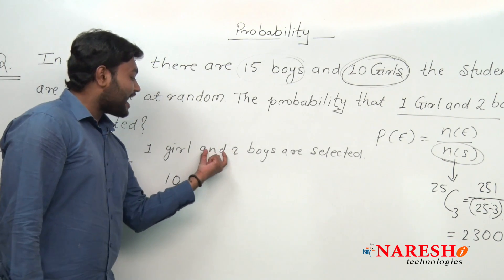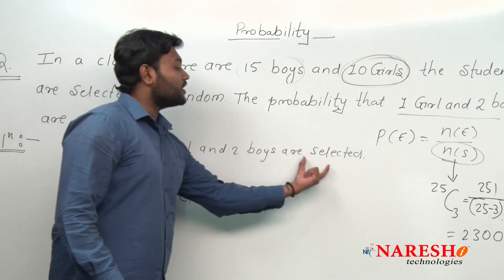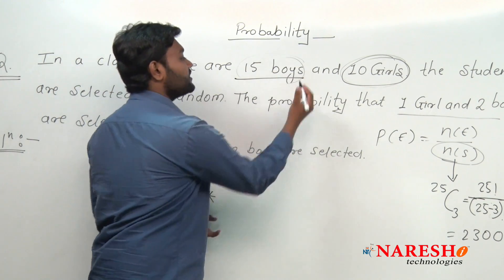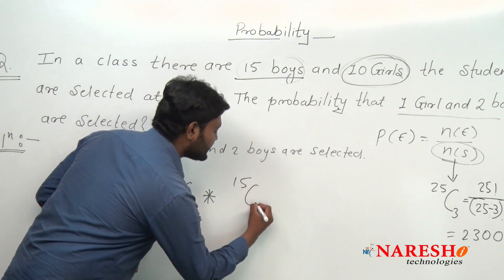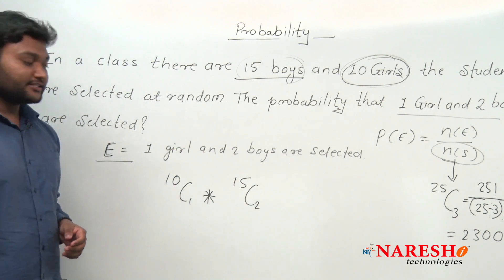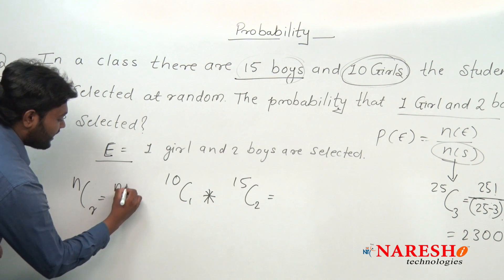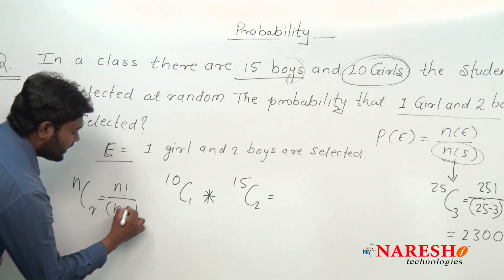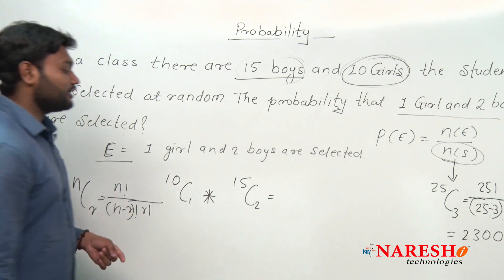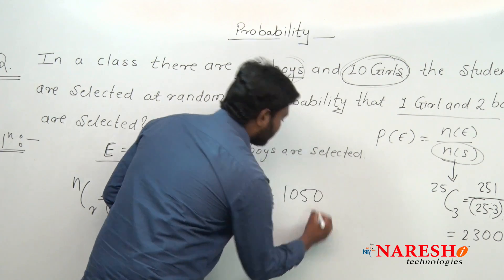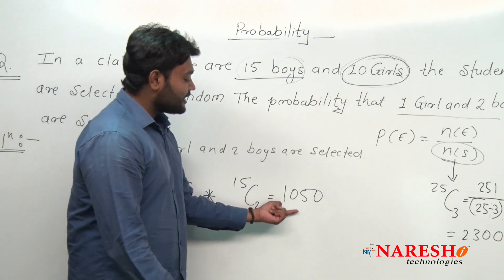And multiplication — two boys are selected. Total number of boys are 15. So among 15 boys, we have to select two boys. So can I say it would be 15C2? Yes, obviously. Solving this using the NCR formula — N factorial upon N minus R factorial into R factorial — we get the answer 1050.